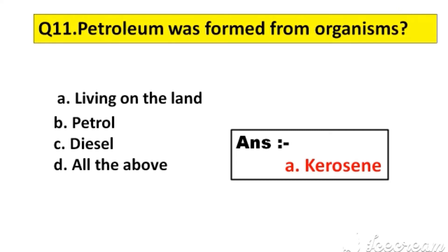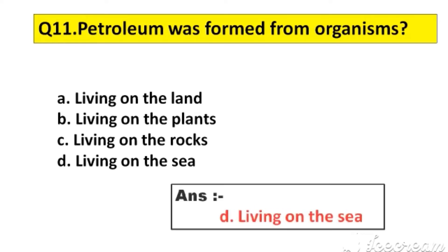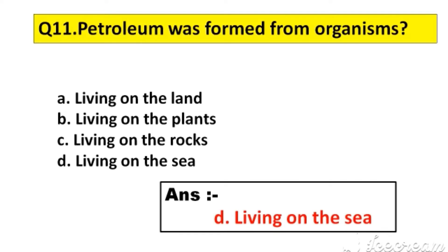Question number 11. Petroleum was formed from organisms option A: Living on the land, B: Living on the plants, C: Living on the rocks, D: Living on the sea. The right answer is option D: Living on the sea.